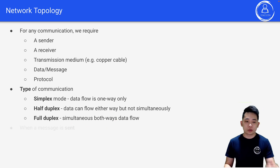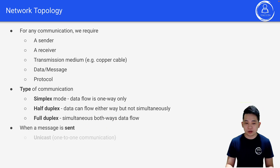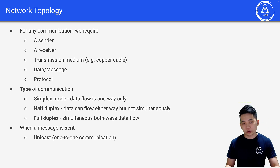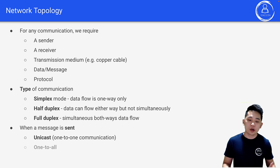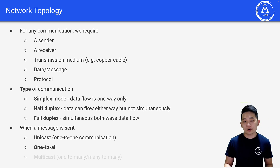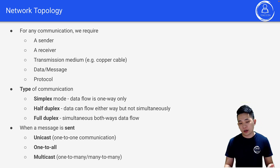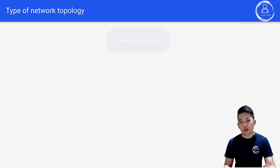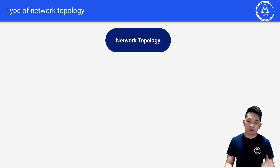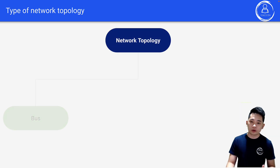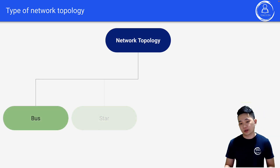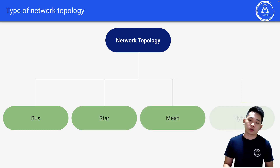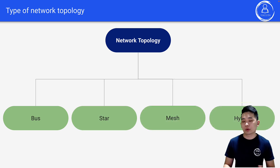When a message is sent, it can be unicast, which means one-to-one communication, or broadcast, which is one-to-all, or multicast, which means one-to-many or many-to-many. Let's look at different types of network topology: bus, star, mesh, and hybrid.